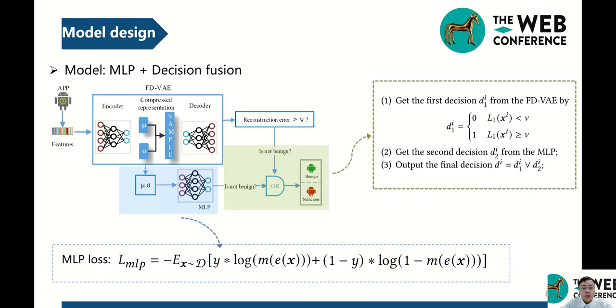Now we introduce the design of MLP and decision fusion. Different from the FDVAE, the MLP is a binary classifier whose output gives the probabilities that an input is benign or not. We connect MLP with the encoder of the FDVAE. Accordingly, the encoder acts as the pre-trained module of the MLP, which reduces model complexity. As for decision fusion, only when both the FDVAE and the MLP declare that an input is benign, can our model output a benign outcome.